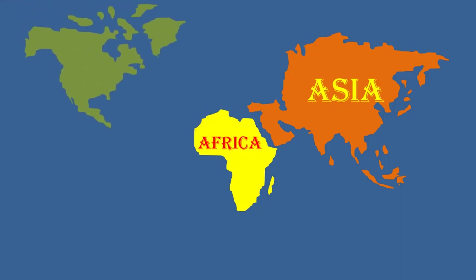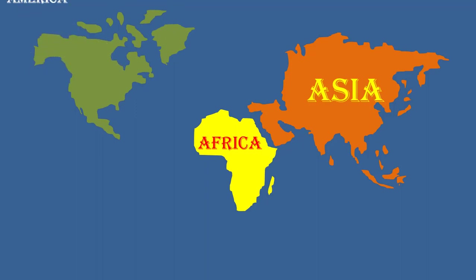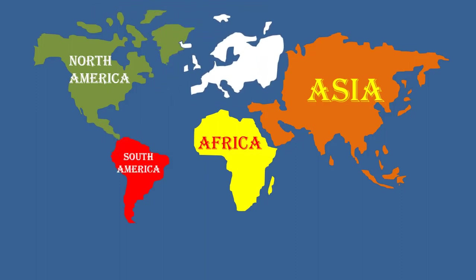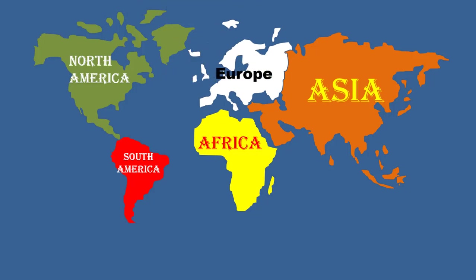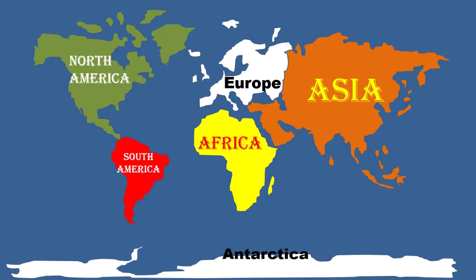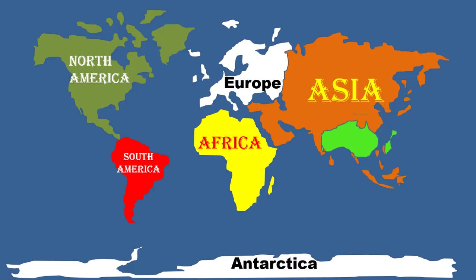This is North America, and next we have South America. This is Europe continent, and next is Antarctica — it surrounds the South Pole and is always covered with snow.